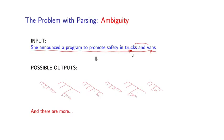But under another interpretation, she could be announcing a program to promote, firstly, safety in trucks and secondly, vans. So I am announcing a program to promote safety in trucks and also vans. So much less plausible, but nevertheless a potential interpretation of this sentence.